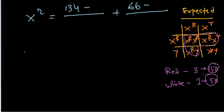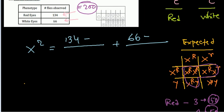That's how we calculate the expected values. Expected value for red is 150, expected value for white is 50. Let's put the values here: 134 minus 150 divided by 150, and 66 minus 50 divided by 50.